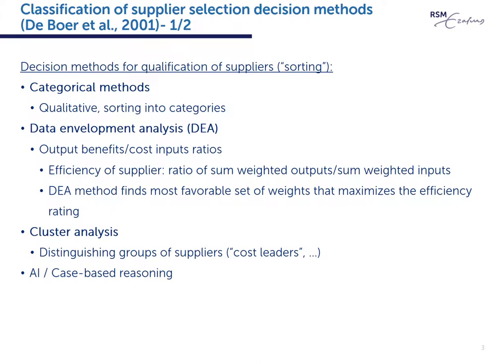In the problem definition phase and the formulation of criteria, usually qualitative methods are used. Therefore, we focus the discussion on quantitative decision methods on the qualification and final choice phases. For qualification, or sometimes called pre-qualification, Boer and colleagues distinguish four main groups of methods for sorting suppliers: categorical methods, data envelopment analysis, cluster analysis, and artificial intelligence or case-based reasoning.